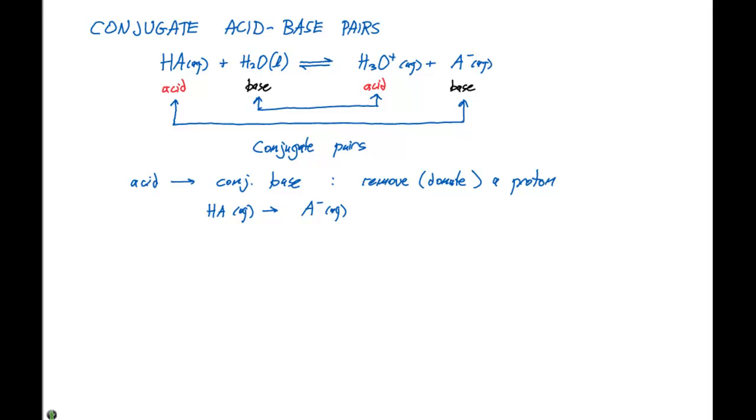To go from a base to a conjugate acid, we have to add or accept a proton. And in the process, or for this particular example, we have H2O liquid going to H3O+ in aqueous solution.